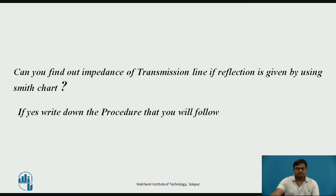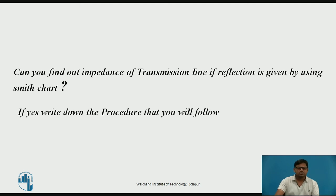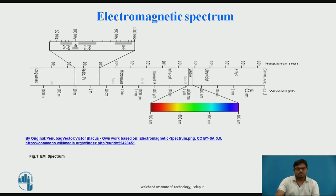If the impedance of the transmission line is given, you can find out the reflection coefficient — or if the reflection coefficient is given, you can find out the impedance. The procedure for finding the reflection coefficient from impedance has already been discussed; to find impedance from the Smith chart, you reverse that process.